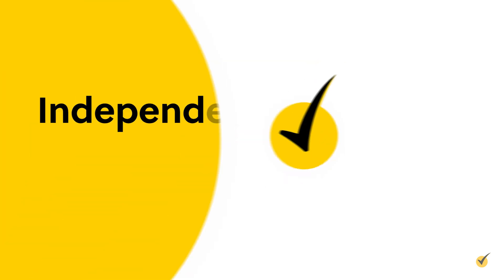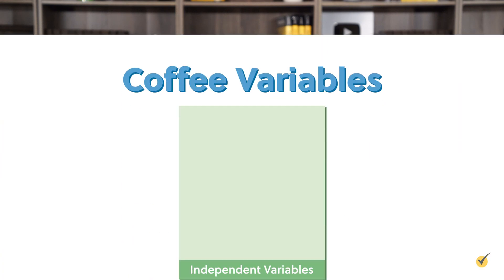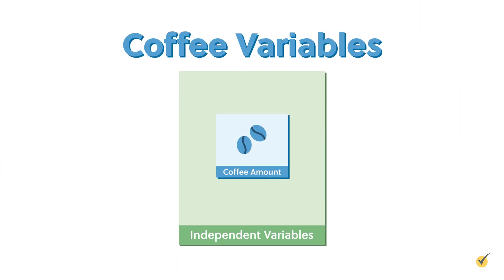But not all variables are created equal. A key part of understanding variables is seeing that there are two types: independent and dependent variables. The independent variable is the one you, as the experimenter, get to control. The independent variable is not affected by other variables — that is why it's called the independent variable. In making the perfect cup of coffee, the amount of coffee I add to the machine is an example of an independent variable. I have control of how much coffee to add.